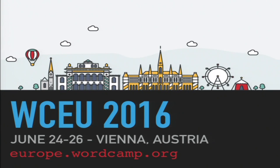WordCamp Europe next year will be in Vienna on the 24th, 25th, and 26th of June. We still have tickets — not many, but we have them. The application for speakers is still open. The application for volunteers is still open. So hurry up. For everything you want to know, accommodation, travels — go to europe.wordcamp.org.